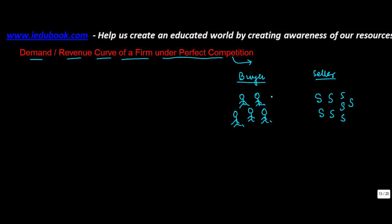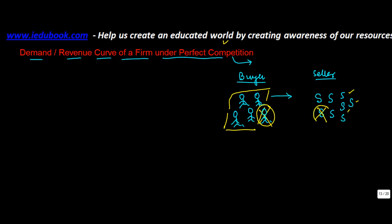There is a large number of buyers such that if one of the buyers goes out, it doesn't affect the competition. Similarly, if one of the sellers moves out, it doesn't affect the competition. This means there is enough demand that if someone moves out, it really doesn't affect the overall demand. There are so many suppliers in the market that even if one or more of them goes out, it doesn't affect the supply.